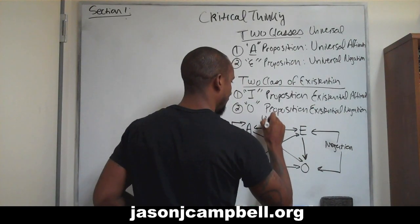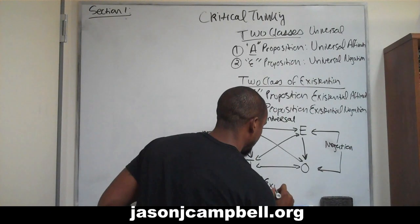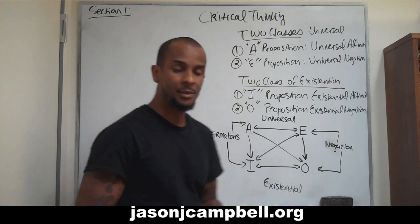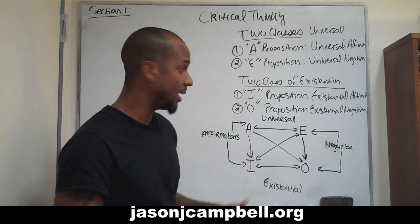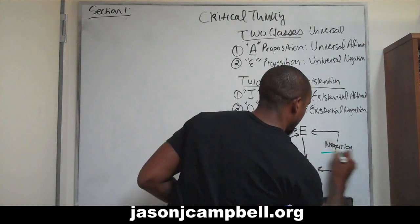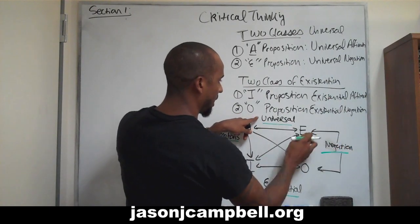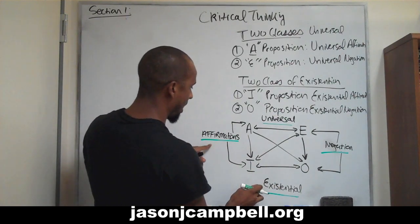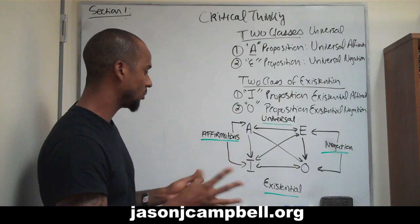We put universal on the top and existential on the bottom. I probably should have incorporated this diagram into the notes — it's a great diagram, but I freestyled it. This is a good way of dividing it so you can recognize each quadrant: existential negation, universal negation, universal affirmation, and existential affirmation.